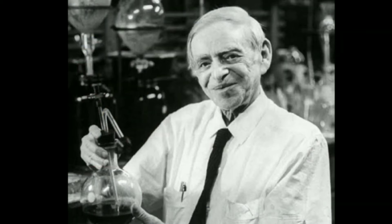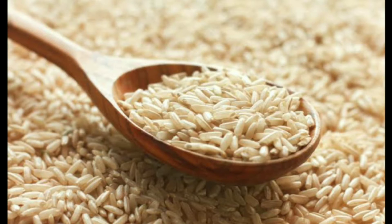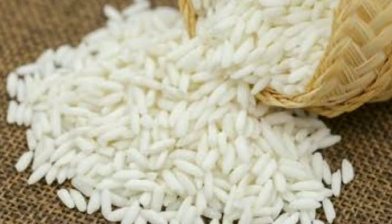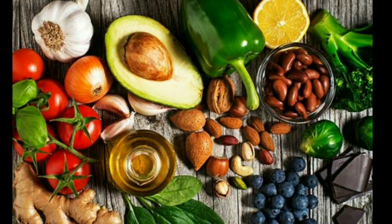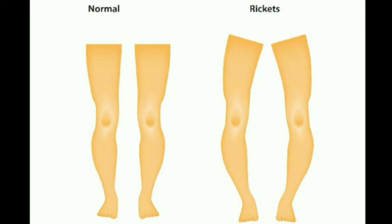In the past, Casimir Funk was a scientist from Poland in Europe. In a scientific article, he read that people who ate brown rice were less likely to get beriberi than those who ate fully milled rice. He was able to identify and isolate the substance which prevents this disease and named it 'Vitamine.' He also proposed that disorders like scurvy, pellagra, and rickets were caused by a deficiency of various vitamins.